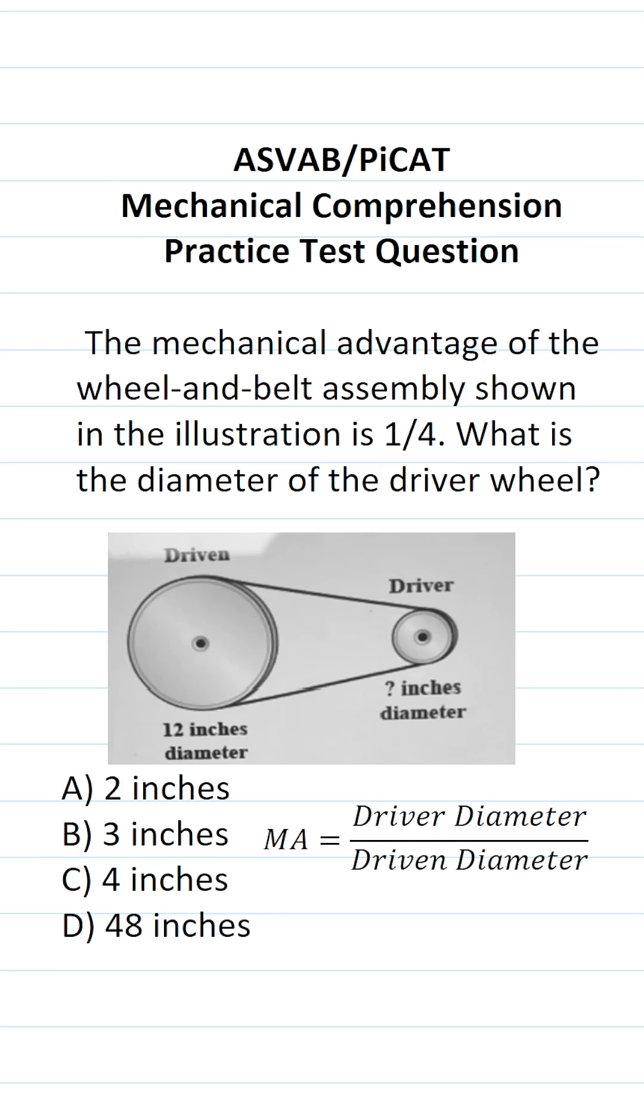So I know many of you can solve this one intuitively, but in order to solve this one with the formula, you have to know this right here. Mechanical advantage MA is going to be equal to the diameter of the driver wheel divided by the diameter of the driven wheel.